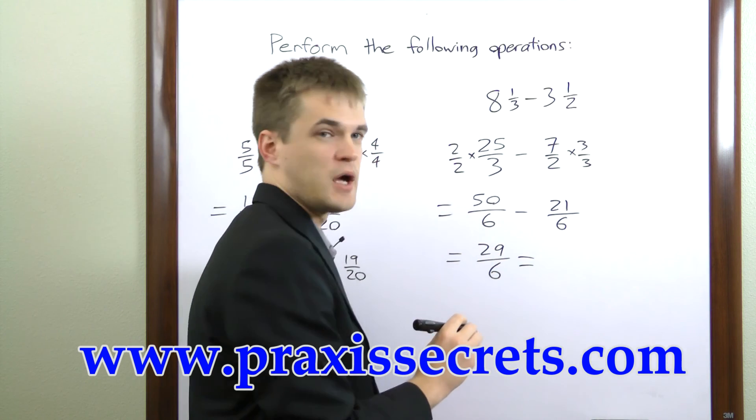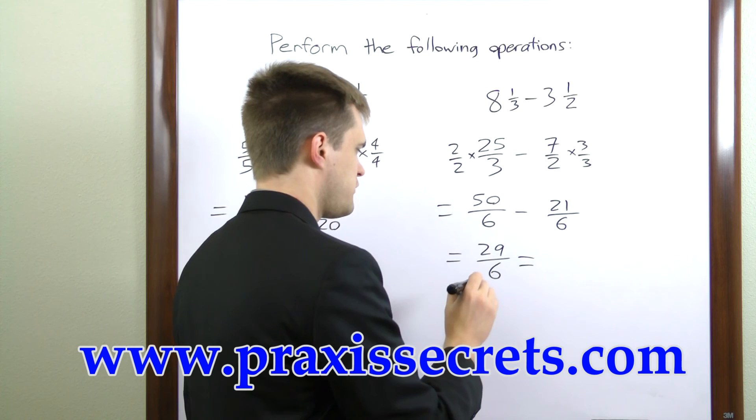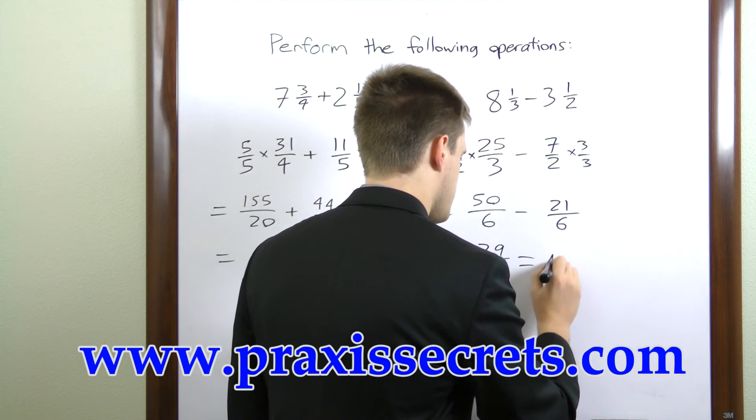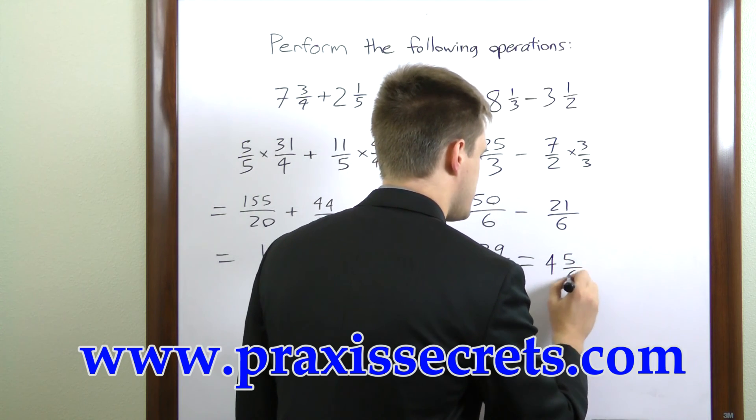Now 6 goes into 29 4 times with a remainder of 5 so we have 4 and 5 sixths.